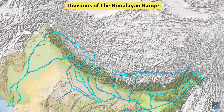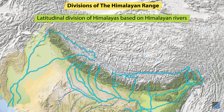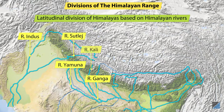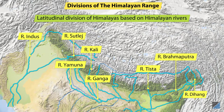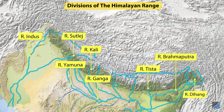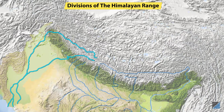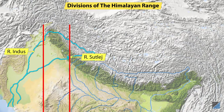However, there is a regional division of the Himalayas too. These west-to-east latitudinal divisions are based on the rivers flowing in the Himalayan region. The region that lies between the Indus River and its tributary, the Satluj, is known as the Punjab Himalaya. This is a 560 km stretch.